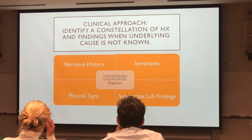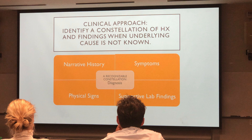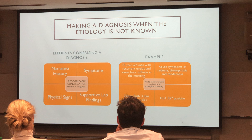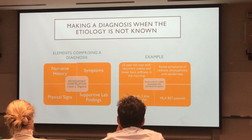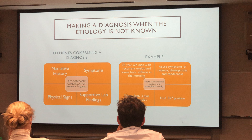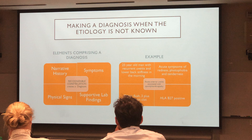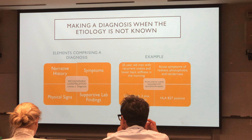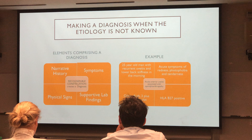We come up with a recognizable constellation or diagnosis. For example: a 25-year-old man with recurrent uveitis and lower back stiffness, especially in the morning. The symptoms were redness, photophobia, and tenderness. On physical exam, we had ciliary flush, three-plus cells, and a fibrin clot. We decided to get a lab test — we got HLA-B27, and it was positive. This leads to the formal diagnosis of acute anterior uveitis associated with spinal arthropathy, supported by a positive HLA-B27.